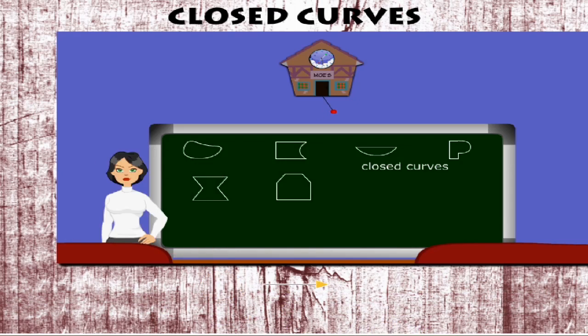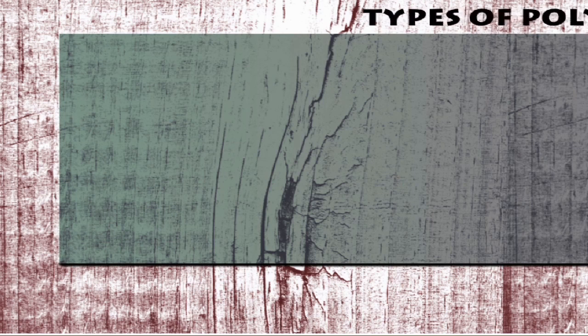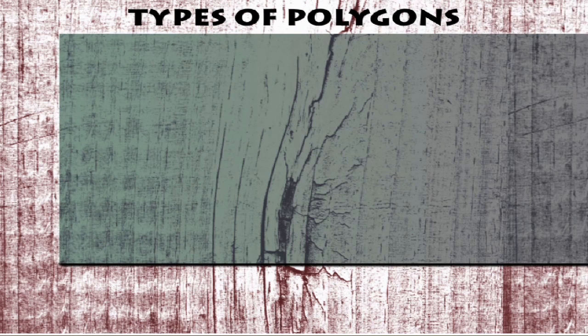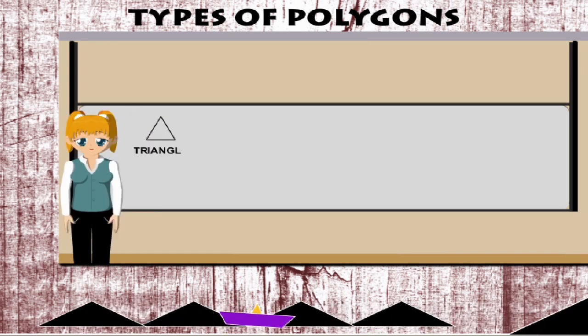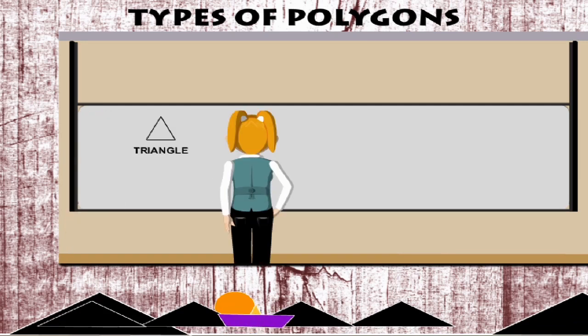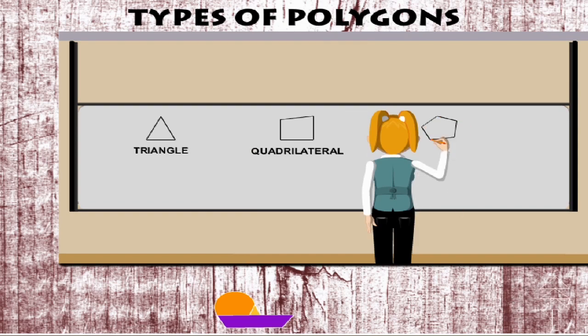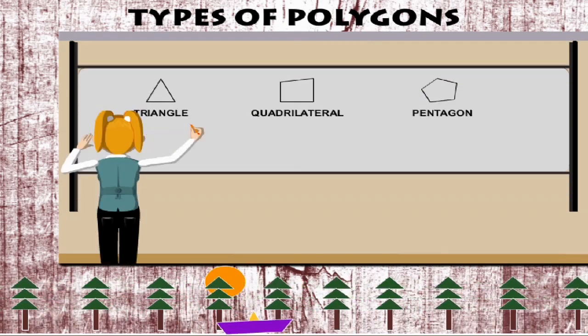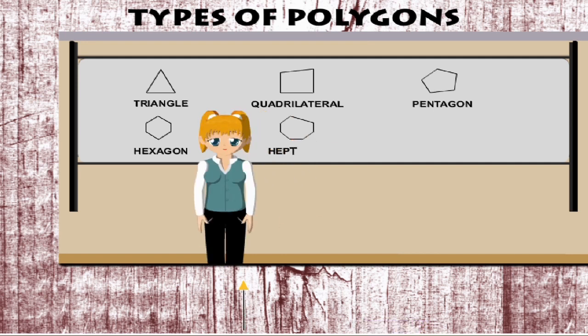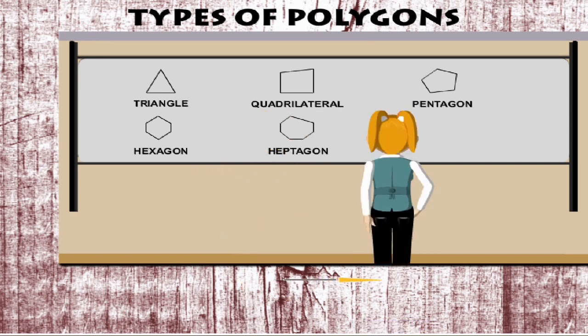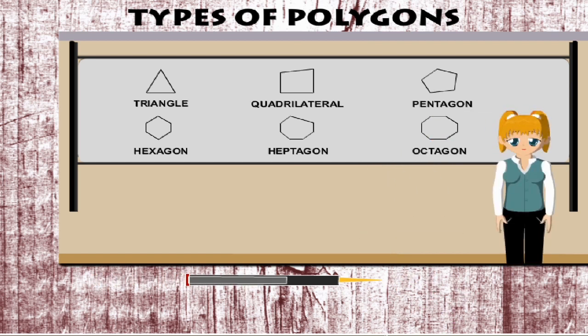Types of polygons. Tita Nancy is on the board making some figures with straight line segments. She makes a 3 sided triangle, a 4 sided quadrilateral, a 5 sided pentagon, a 6 sided hexagon, a 7 sided heptagon, and an 8 sided octagon. All these shapes are examples of polygons.